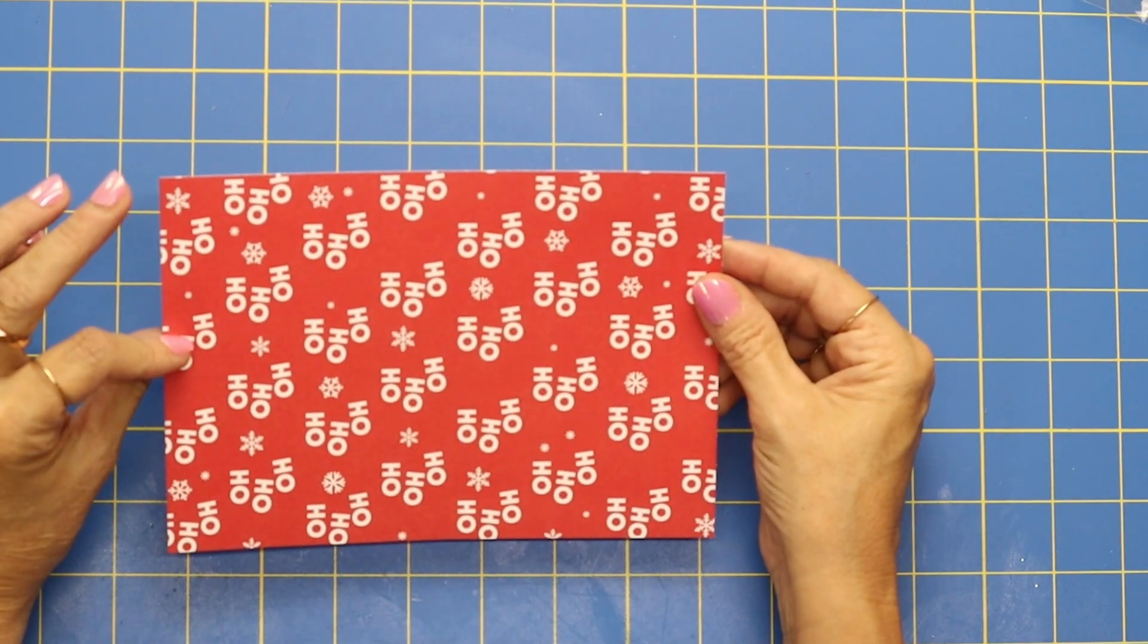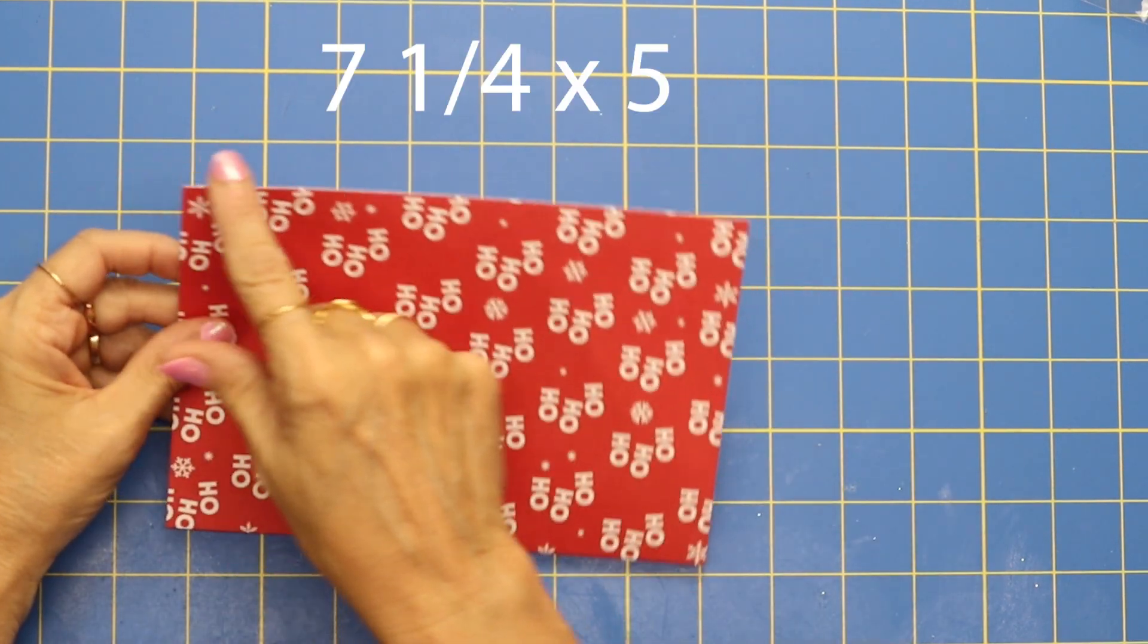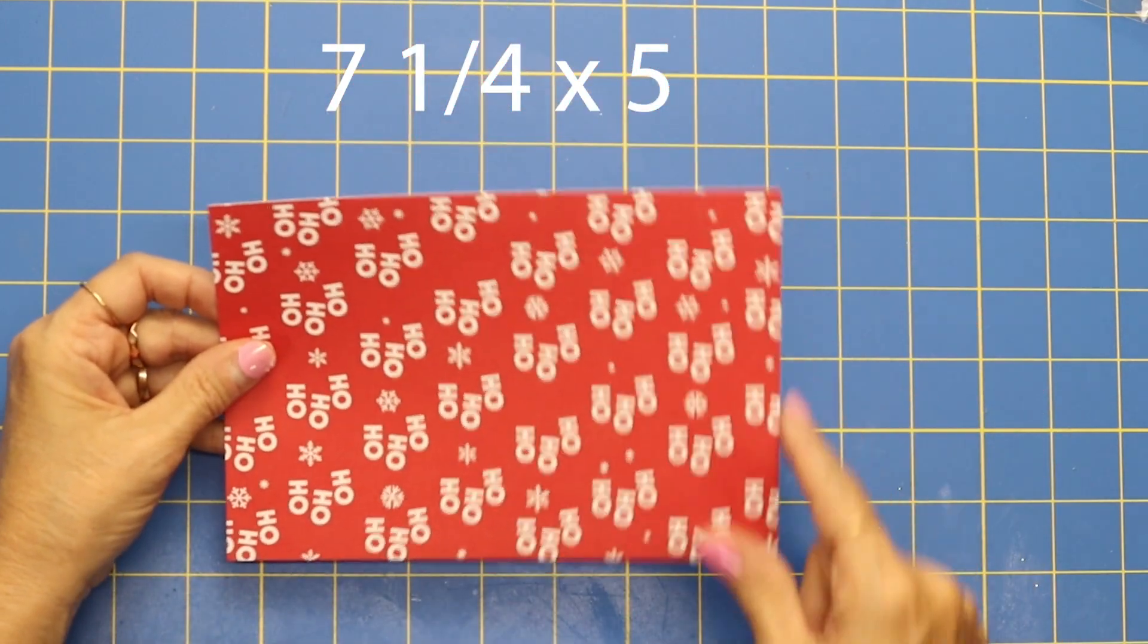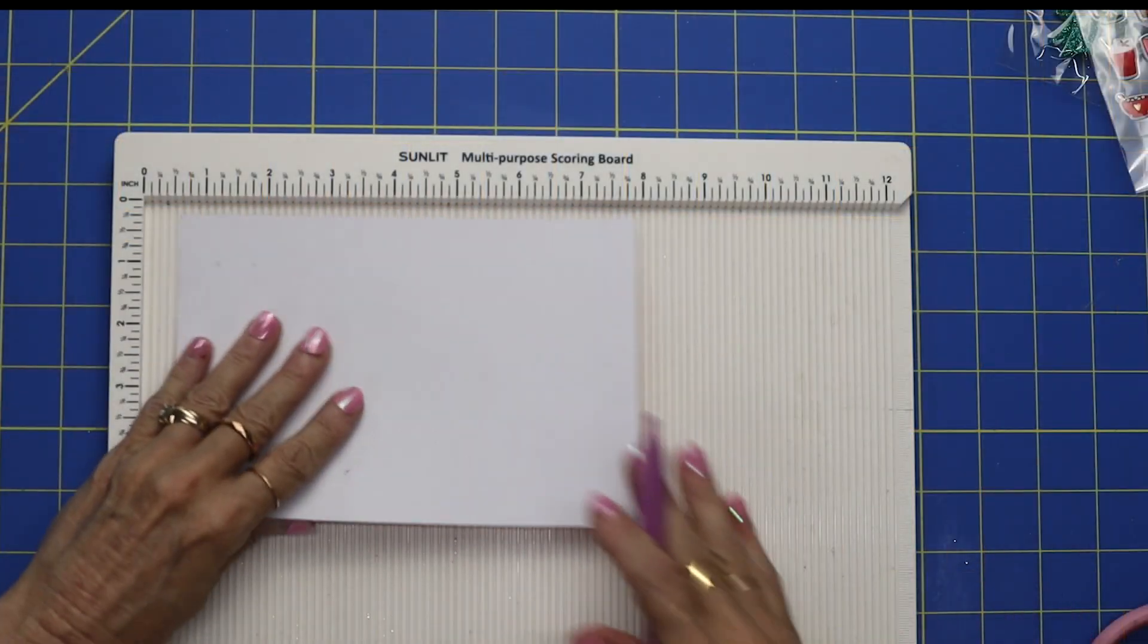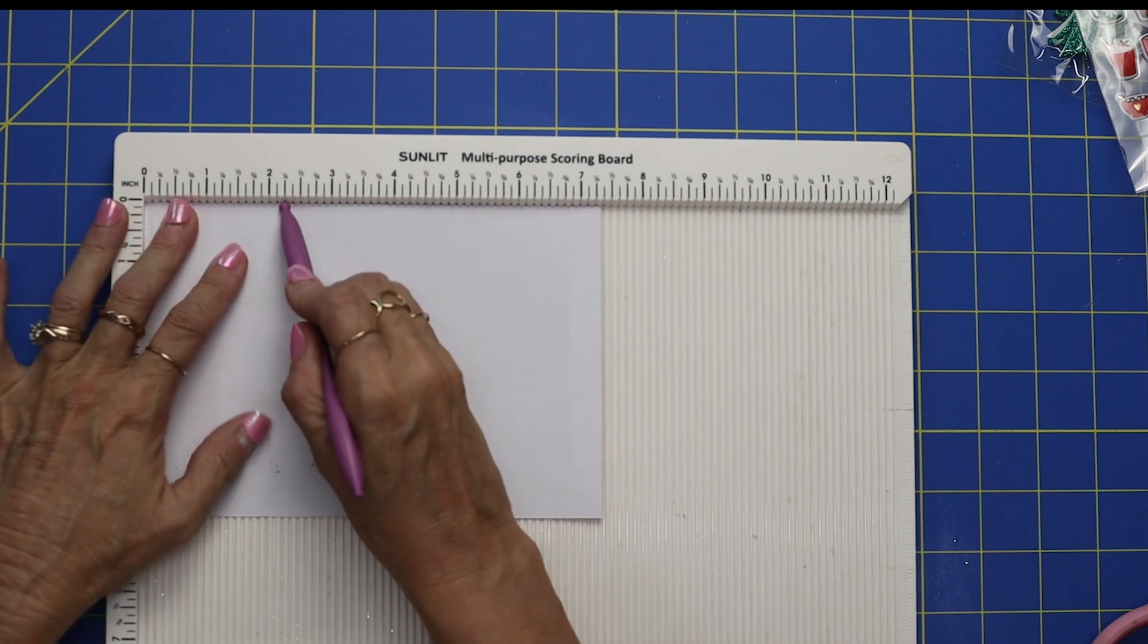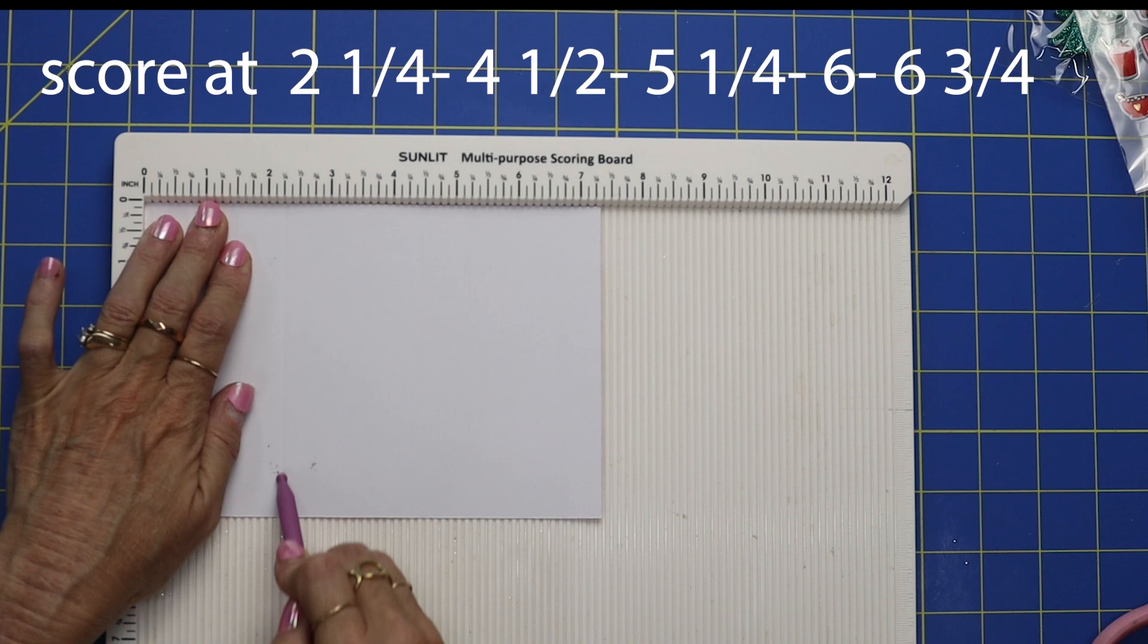So go ahead and grab yourself a piece of cardstock that is seven and a fourth by five. Once again, seven and a fourth by five. Bring your paper in and on the seven and a fourth side you want to score at two and a fourth, at four and a half.